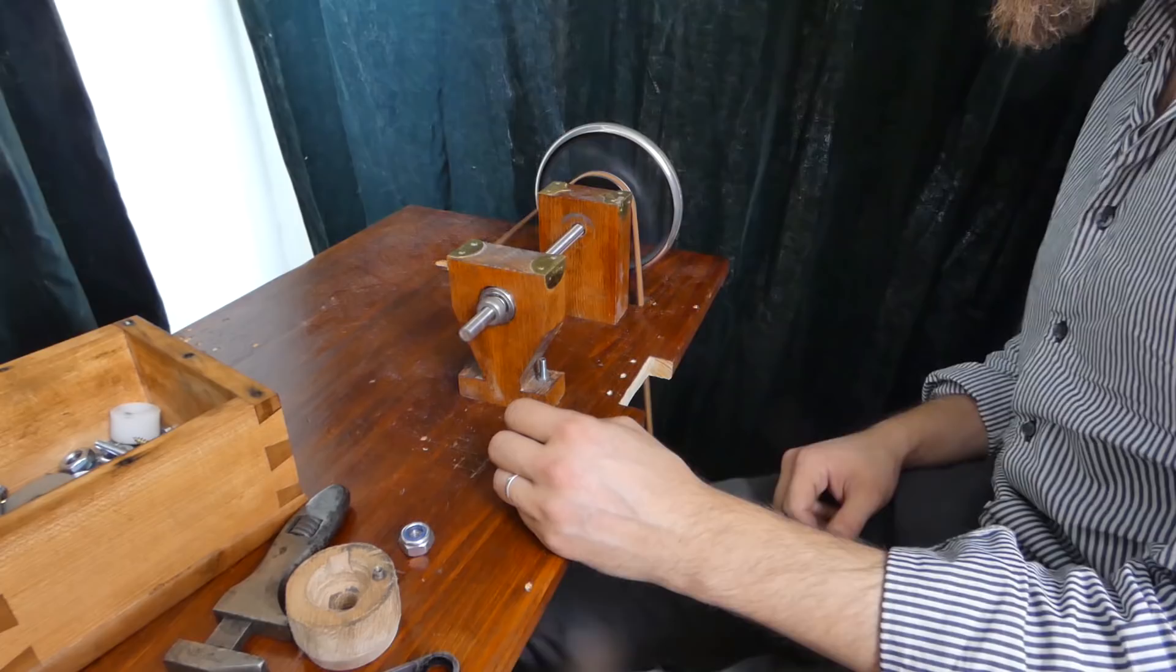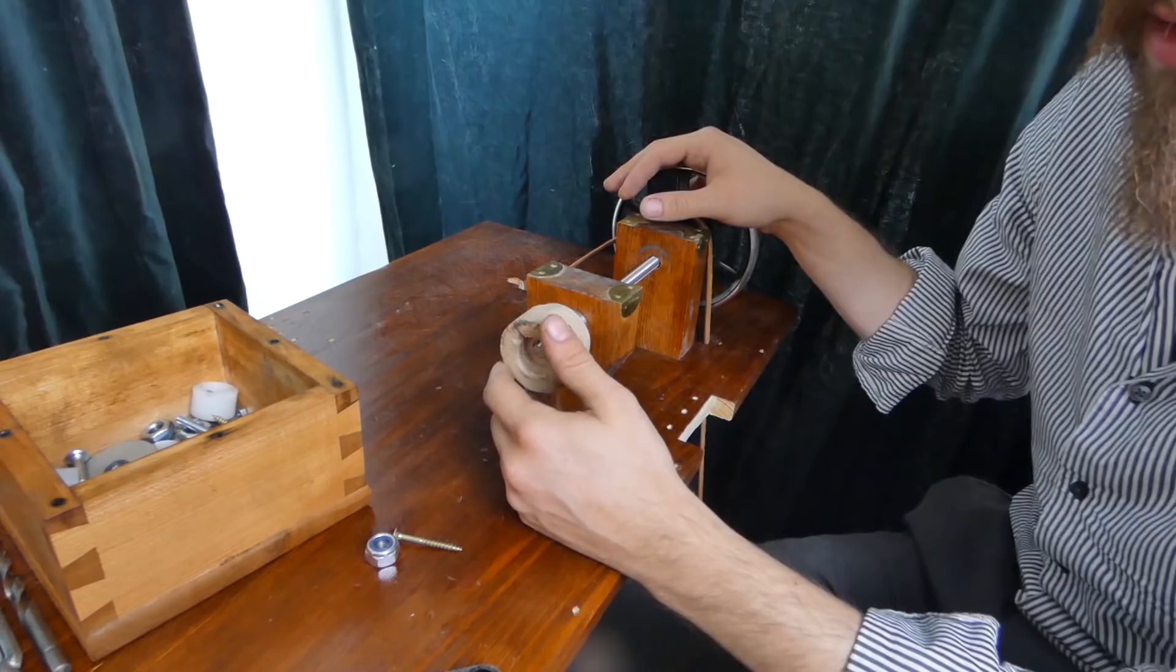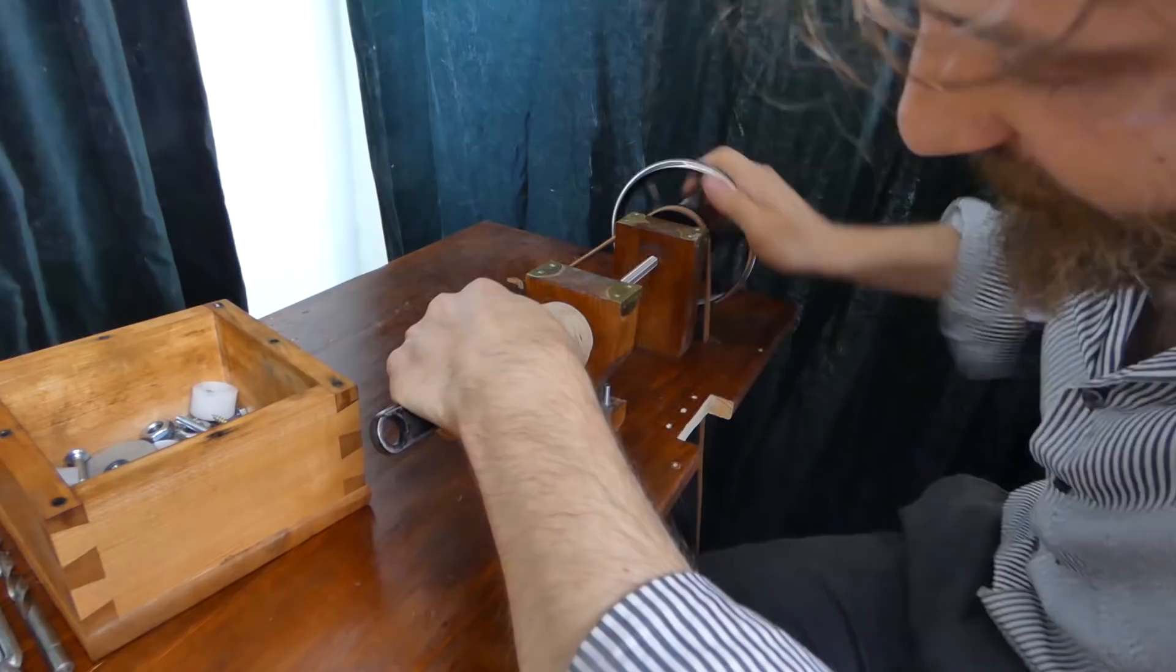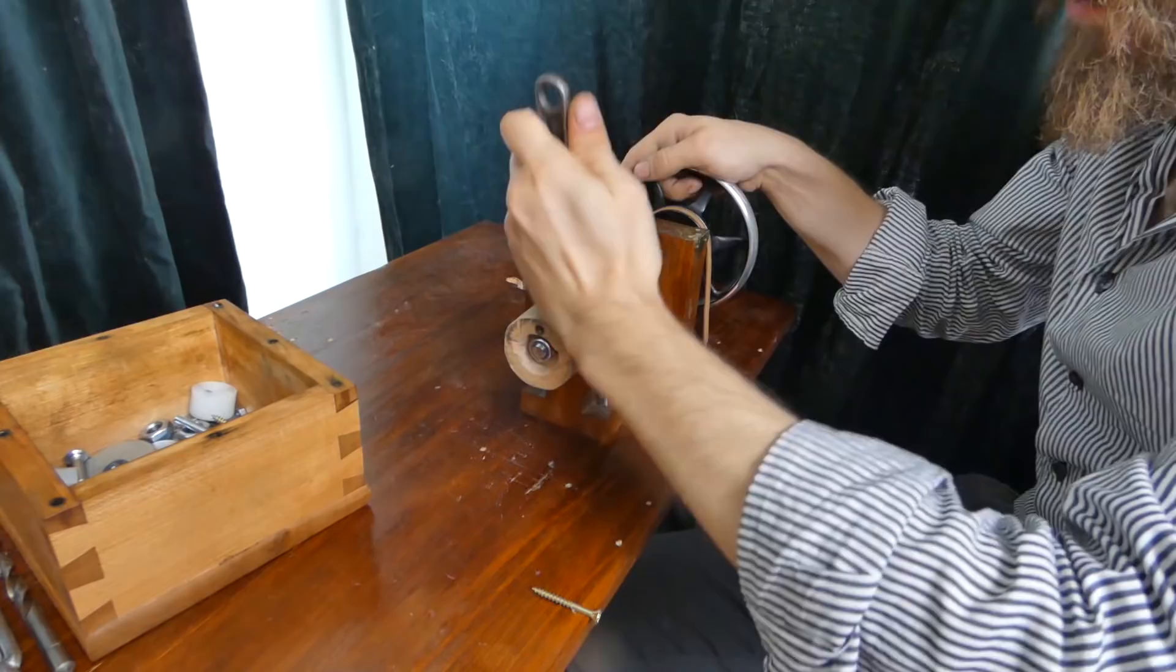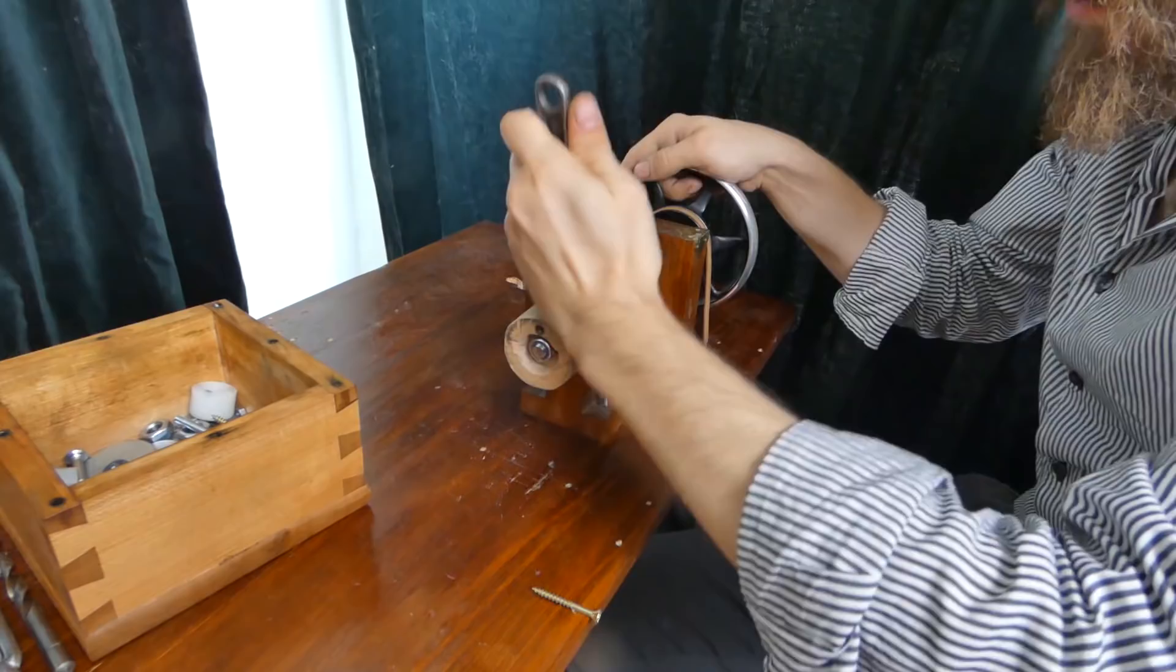This ugly looking piece of wood is actually the heart of the scroll saw, as I would call it, because this is the part that converts the rotational motion to a linear one. This will result in the scroll saw going up and down in the fashion that we know and love. Later on in the video we'll see how simple it is and how it functions. So the next step is to make the scroll saw itself.